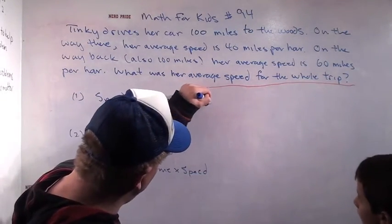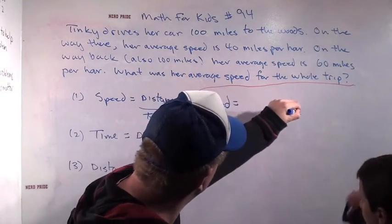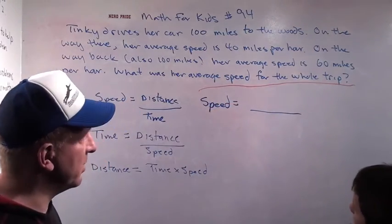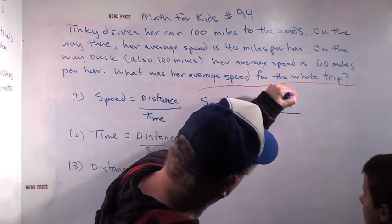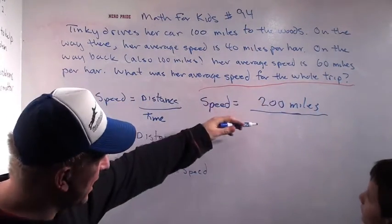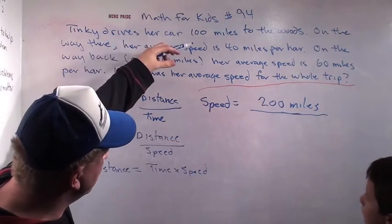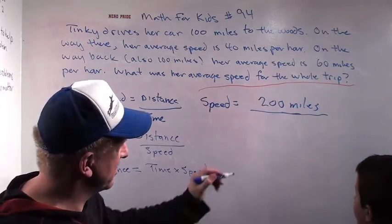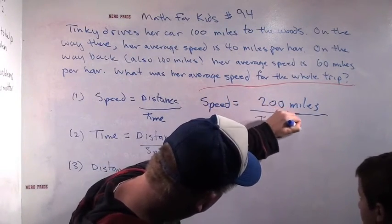So, her speed equals distance divided by time. What was the total distance of the trip? Two hundred miles — 200 miles divided by time. The time is going to be the time for the first part of the trip and the time for the second part of the trip, so I'm going to call this time one plus time two.